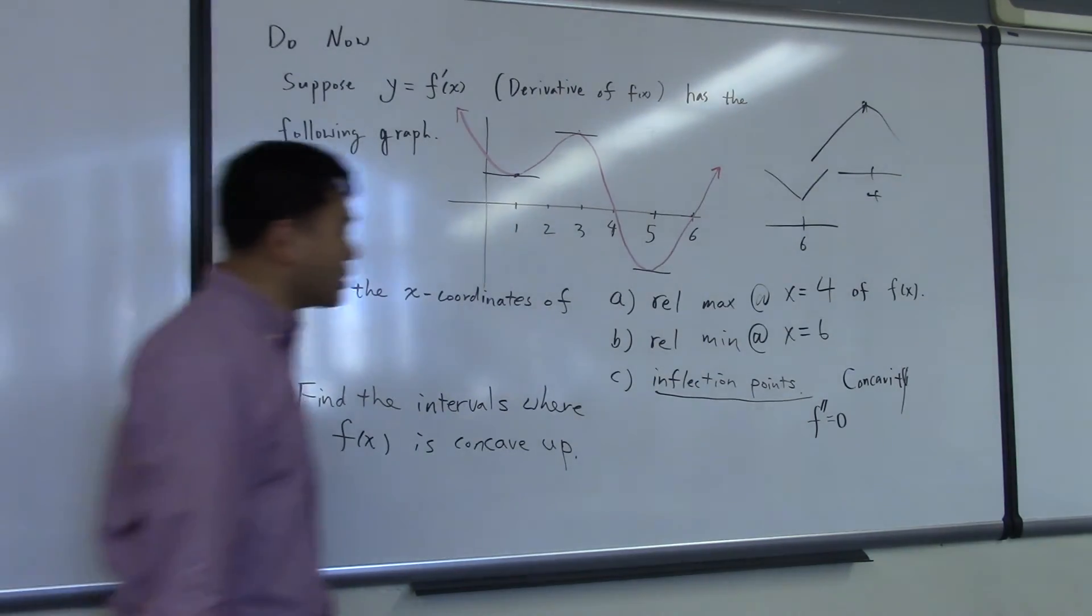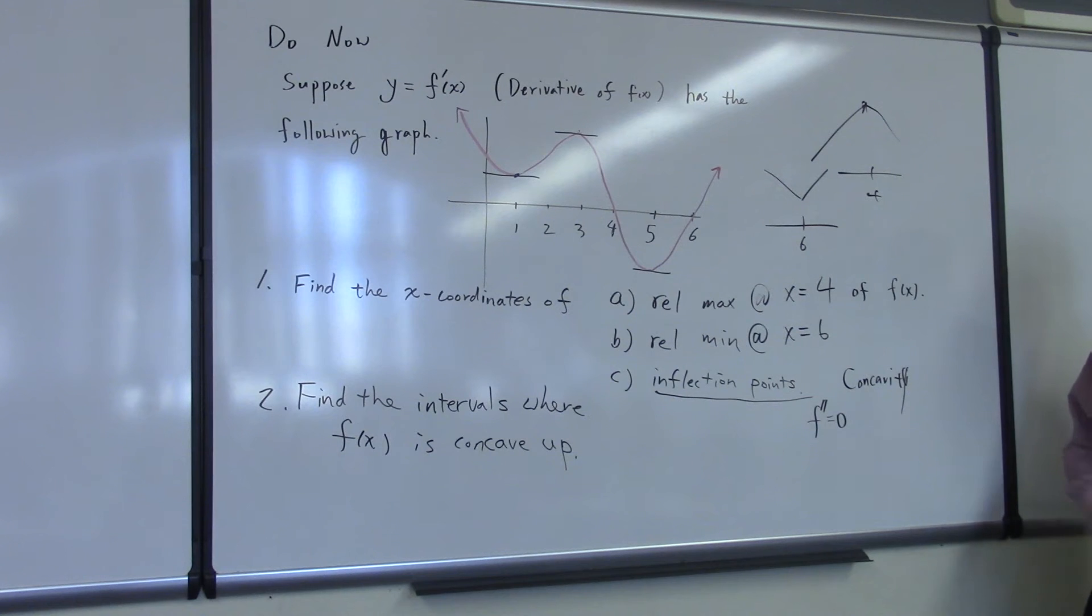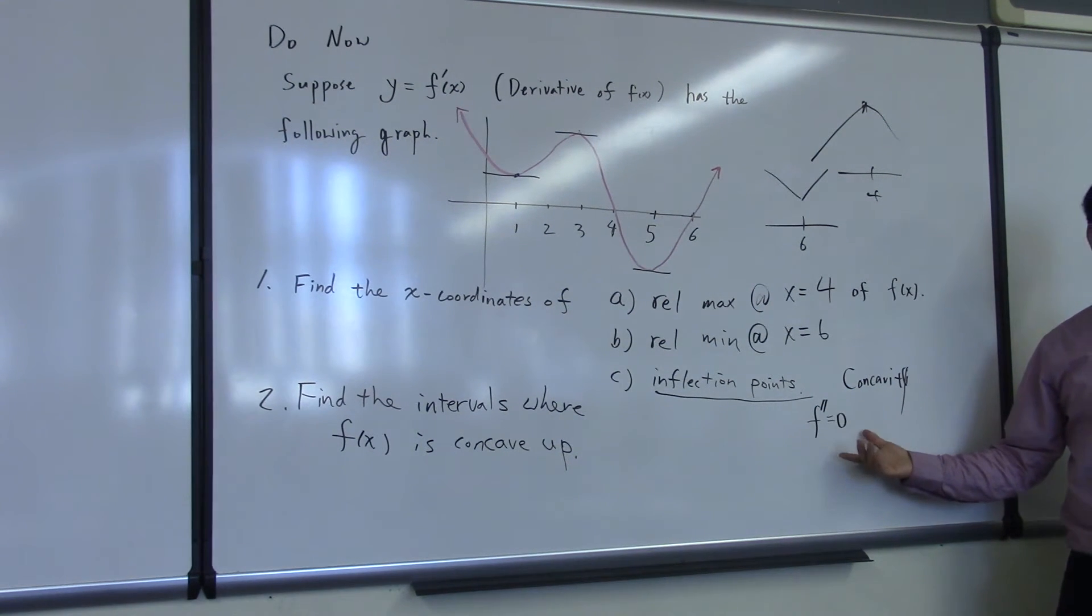Now, f double prime being equal to 0 is something that's necessary, but it doesn't guarantee that it has to be an inflection point. There are some special cases where you do have f double prime 0, but it's still not an inflection point. To guarantee that it's an inflection point, the value of f double prime has to change before and after.